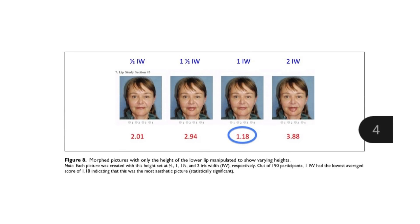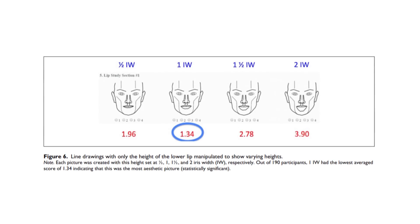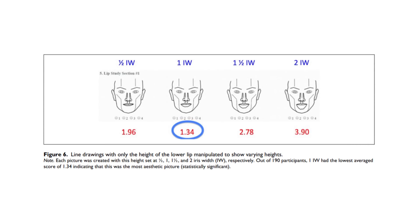The researchers also saw a similar trend in regards to the lower lip height, where one iris width was selected by the study group as the most ideal in both the line and morphed pictures. This data closely resembled what Young found with the nasal bridge and tip width, with people showing a preference for a smaller lower lip in contrast to a larger lower lip, as the half iris width height of the lower lip was preferred over the one and a half lower lip.